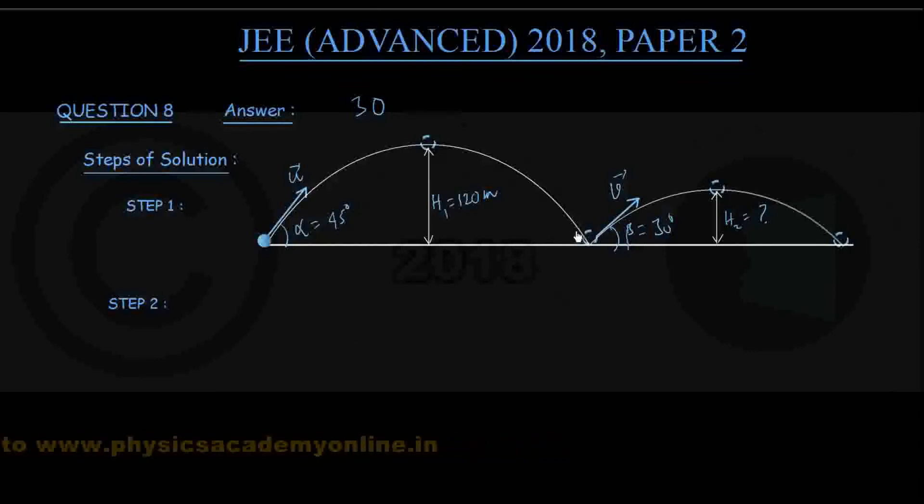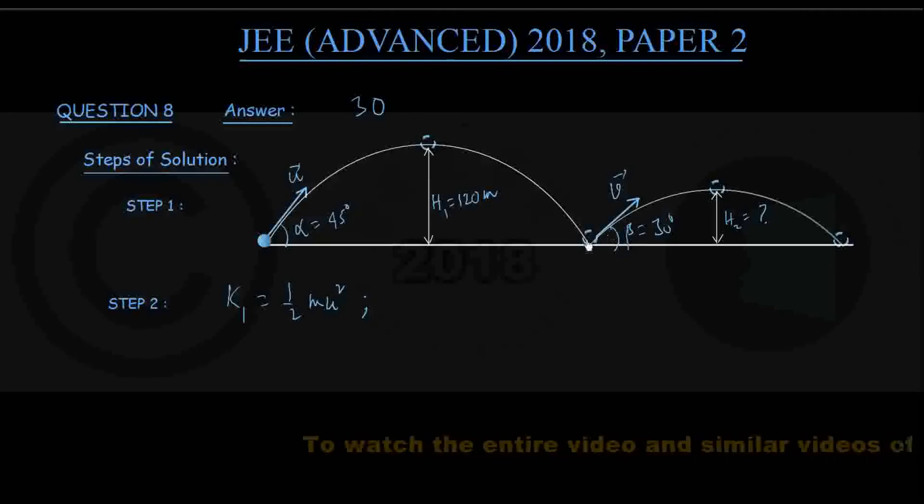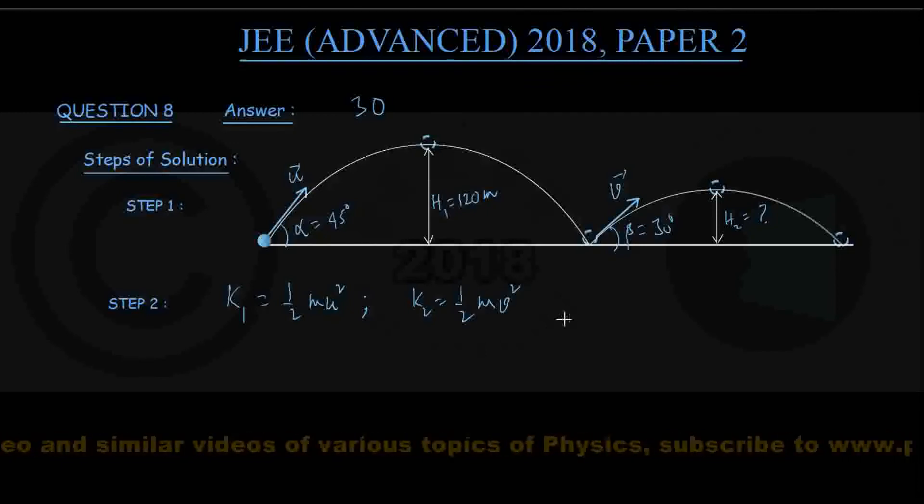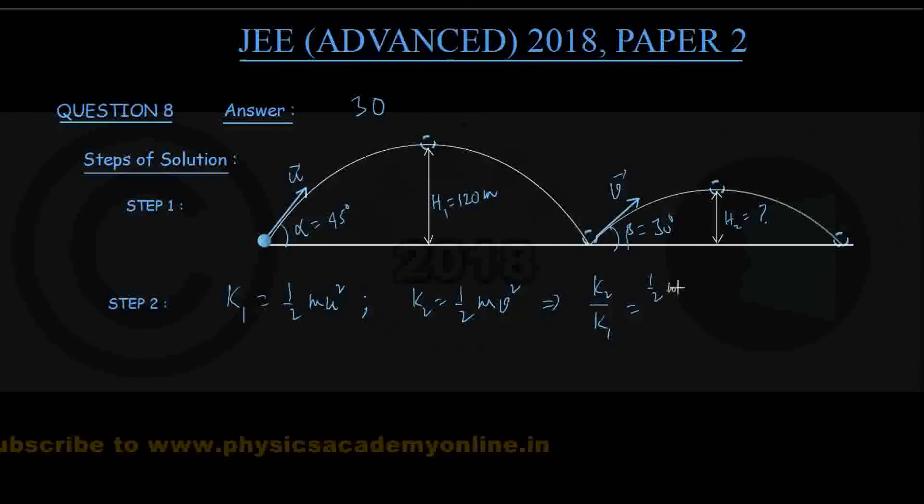So suppose just before hitting the ground, kinetic energy of the ball is k1. So this k1 is equal to half mu squared. And after hitting the ground as it rises, kinetic energy at that time is k2, which will be equal to half mv squared.